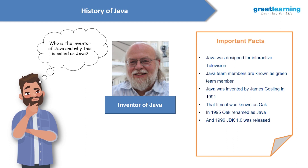The Java project was initiated by James Gosling, Patrick Naughton, and Mike Sheridan in June 1991. It was first called Green Talk by James Gosling, with file extension .gt. After that, it was called Oak, developed as part of the Green Project. Oak was chosen because it was a symbol of strength and the national tree of many countries like USA, France, and Germany. In 1995, Oak was renamed Java due to trademark issues — because Java is an island in Indonesia where the first coffee was produced, called Java coffee.